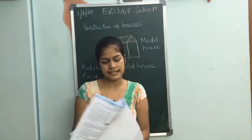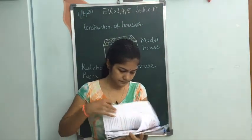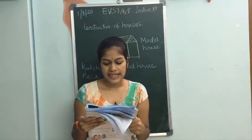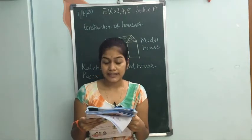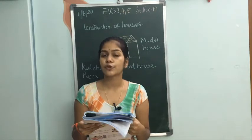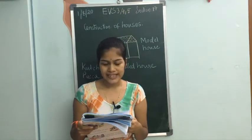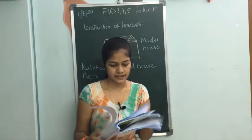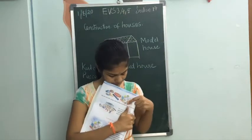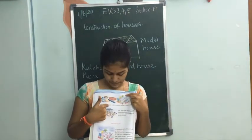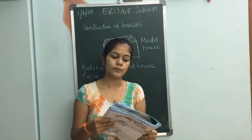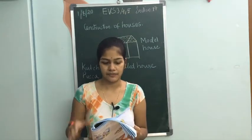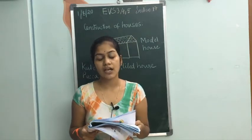Now we will see the exercise. True or false — a building dash is used to build a building. To build a building, you need concrete, bricks, slab stones — you need these to build a building. We should build our house at a reasonably high level. A compound wall should be built around our house.